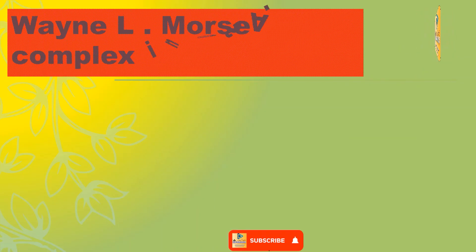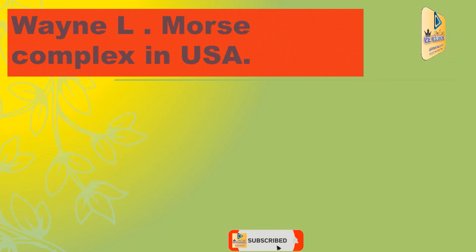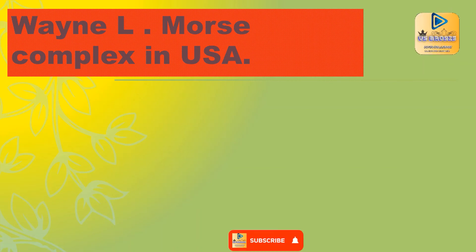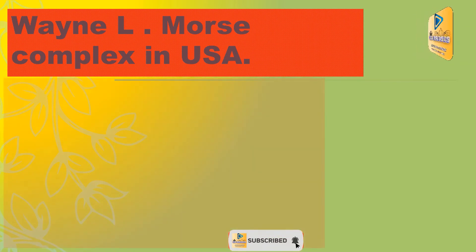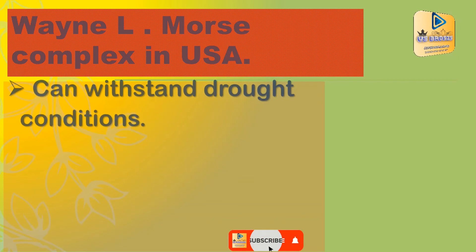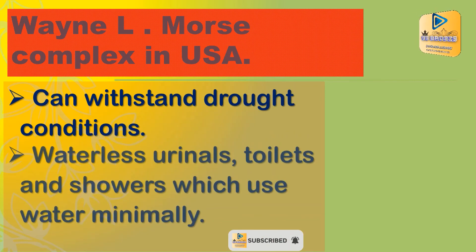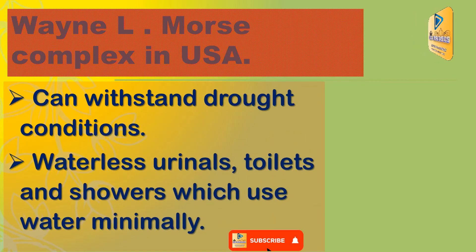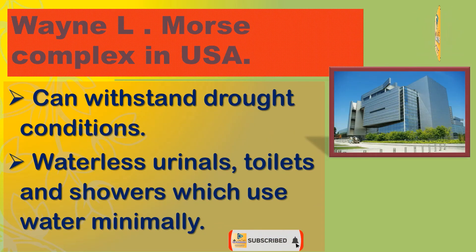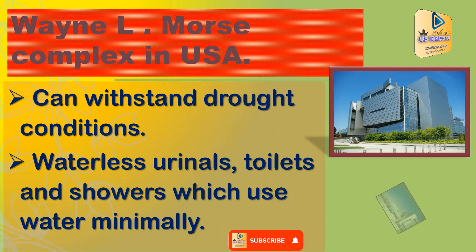Then, the Wine and Elmos Complex in the US. It can withstand drought conditions, uses waterless urinals, and toilets and showers which use water minimally.